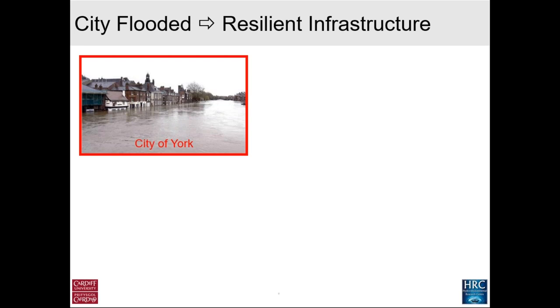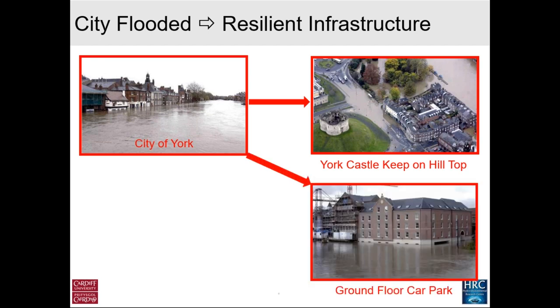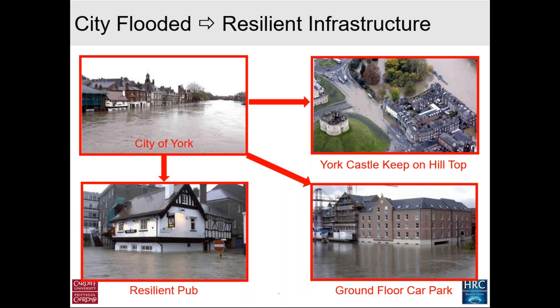Looking at the city of York, which floods regularly, it has some interesting characteristics. The York Castle keep, built in about the 13th century, is on the hilltop and never floods — we can learn a lot from the past. We also see modern-day solutions: a hotel where the ground floor is basically a car park, and a pub which floods quite regularly but is now resilient. That pub is all concrete inside, and 24 hours after the flood has receded it's washed out and back in business. These are the sorts of issues we need to consider for the future when making historic and listed buildings flood resilient.